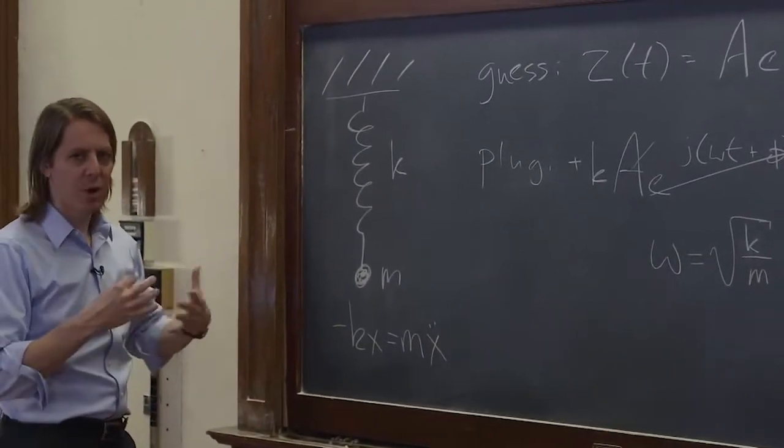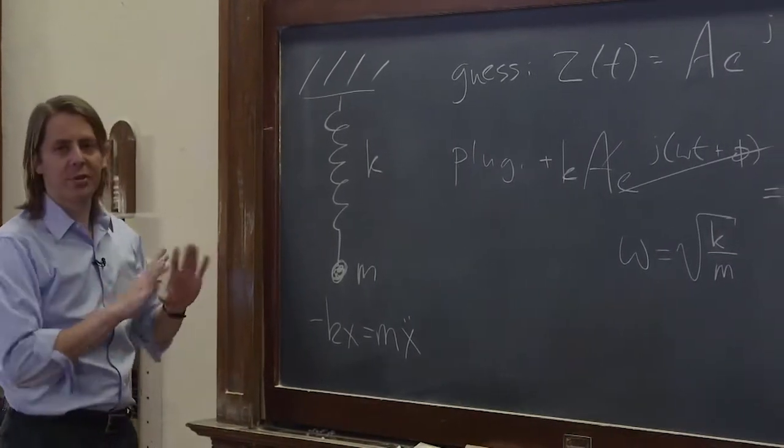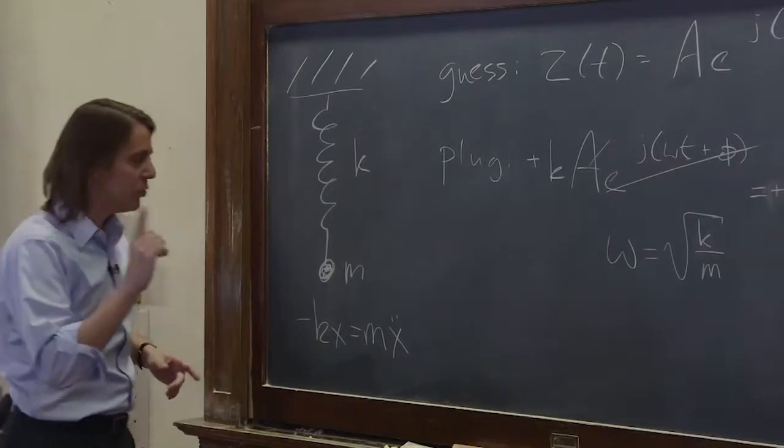and then a freely varying amplitude and a freely varying phase, because those depend on the initial conditions. Those don't depend, those aren't required to be a certain value by the system. Those are allowed to vary. So it's just like our sinusoidal guess, basically the same answer, except there's one thing.